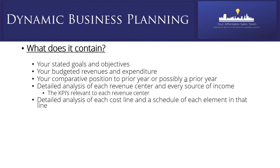You also need detailed analysis of each cost line and a schedule of each element within it. I've seen plans that just list 'sales and marketing' with a number — you need a shopping list within those categories so you can see what you're spending on social media, domain name registration, and which partners you're working with. That allows you to evaluate the value of each item. Cash flow — which I'll come back to — is extremely important right now. Cash is without doubt king.